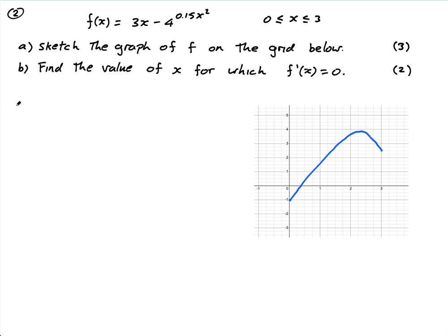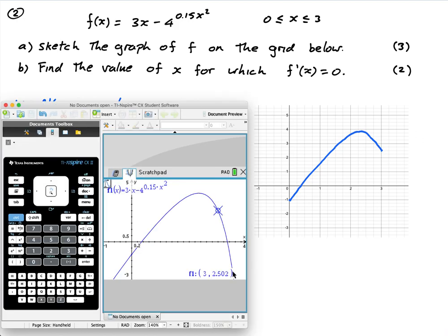Part B, he says, find the value of x for which the derivative equals zero. Well, hopefully, this is just testing, guys, that you know that a derivative equals zero at the maximum. So you could actually write f dash of x equals zero at maximum. That'll give you like a guaranteed one mark, even if for some reason you mess the next bit up. It just shows you understand where the first derivative is zero.